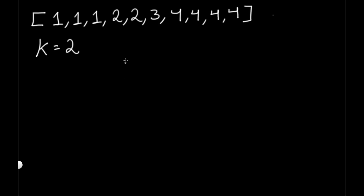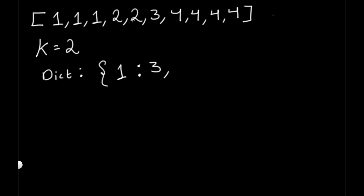Let's say this list over here is our input and the k value is 2, so we need to return the two most frequent elements. Our first step is to use a dictionary to hold all the values and their frequencies. We have 1 with a frequency of 3, 2 with a frequency of 2, 3 with a frequency of 1, and 4 with a frequency of 4.